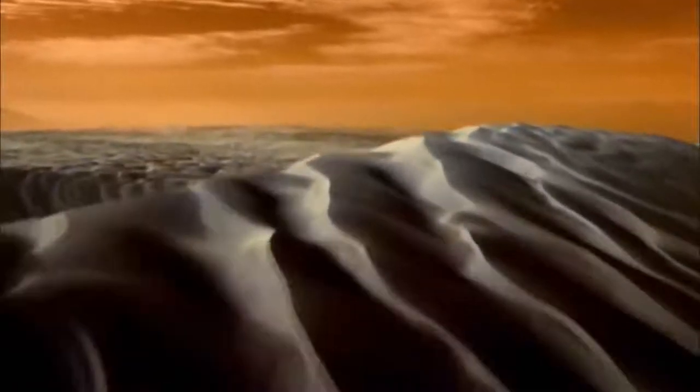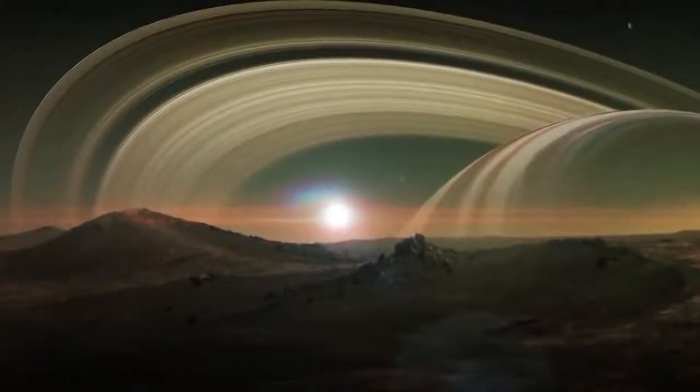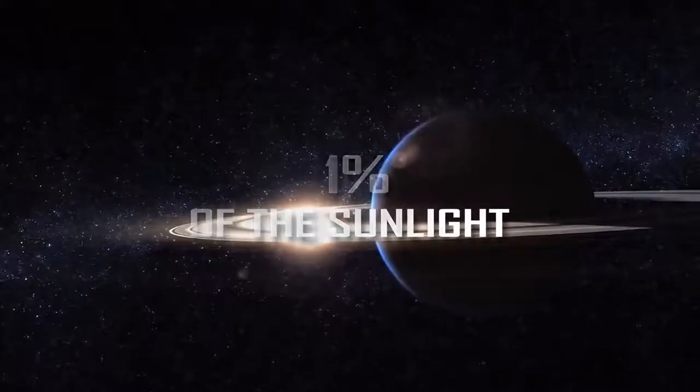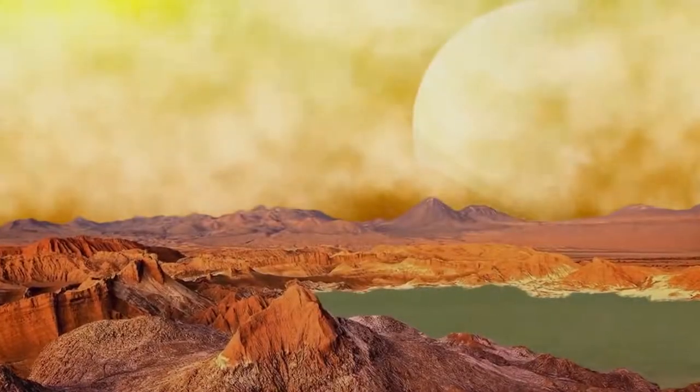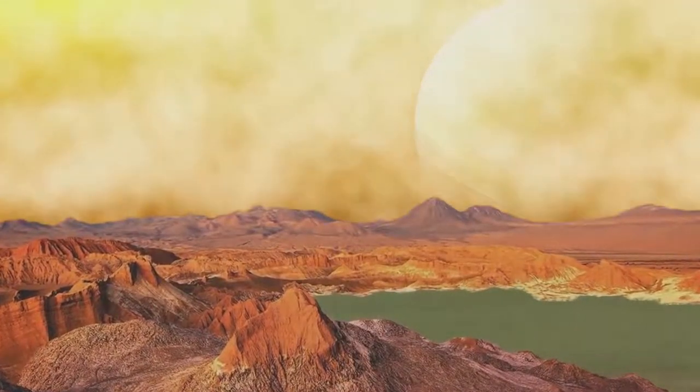Titan also has valleys, mountains, ridges, mesas, and dunes, some of which are ice-covered deep lakes from vicious winter storms because it's far away from the sun and only gets 1% of the sunlight Earth does. So how does it have an atmosphere with rain, ice, and liquid surfaces?